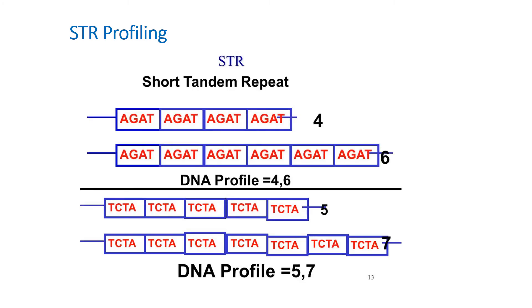The number of repeats of each STR at each genetic site varies within human populations. STR profiling is the method used to identify individuals or cell lines by characteristics of their DNA.